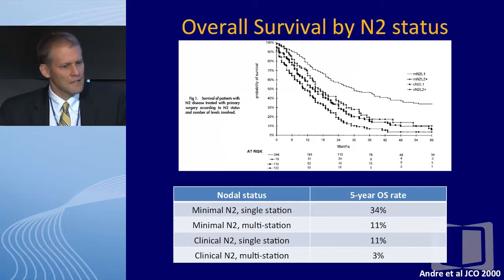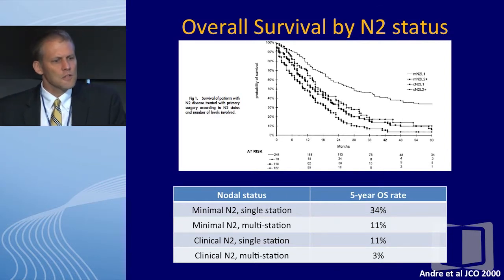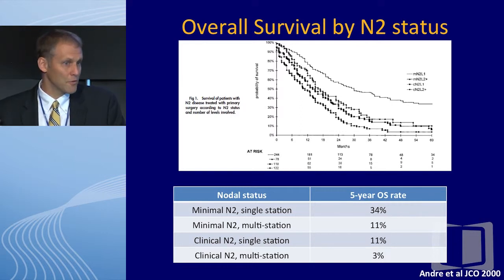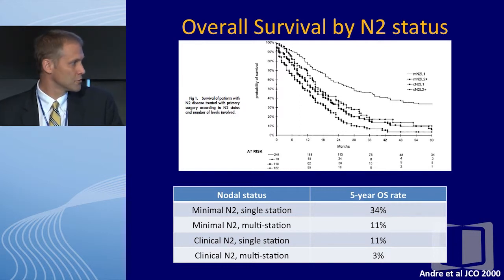The minimal single-station N2 group comprised 244 out of 702 patients — clearly a minority. This is our best case scenario, and as Jack showed, single-station N2 nodes do very well. However, the majority of patients have either clinical N2 involvement or multi-station N2 involvement, and they do very poorly with surgery.